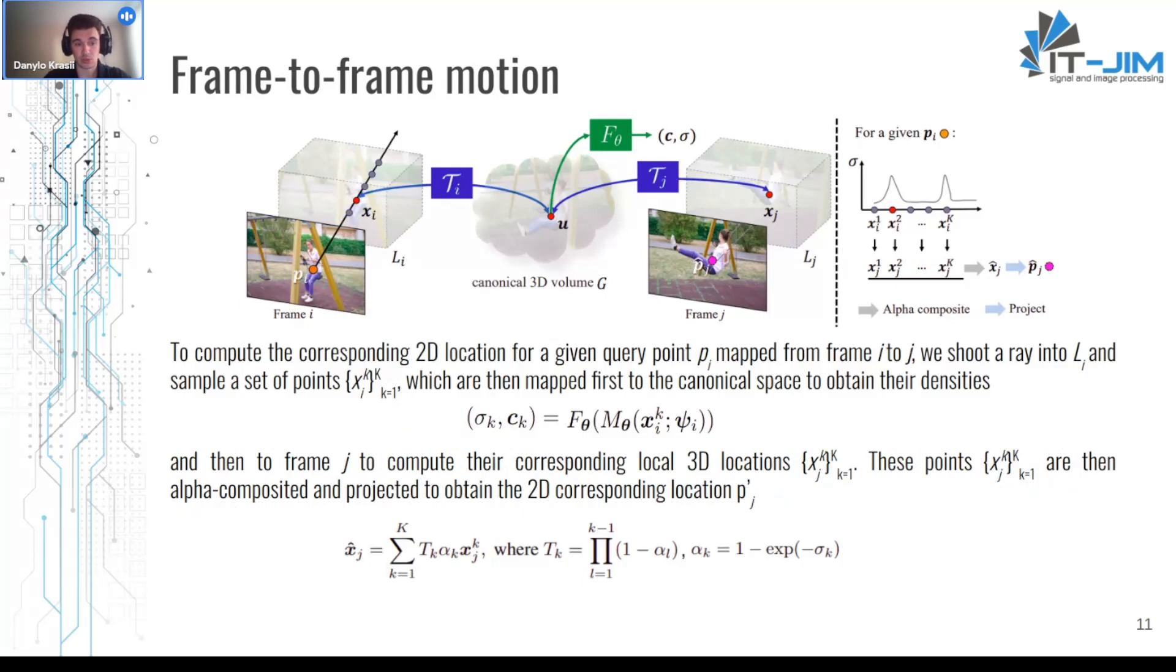To compute the corresponding 2D location for a given query point p_i mapped from frame i to frame j, we cast a ray l_i and sample k samples x_ik. We sample k samples on the array which are equivalent to appending a set of depth values z to p_i. And despite not being a physical camera array, it captures the notion of multiple surfaces at each pixel and suffices to handle occlusions.